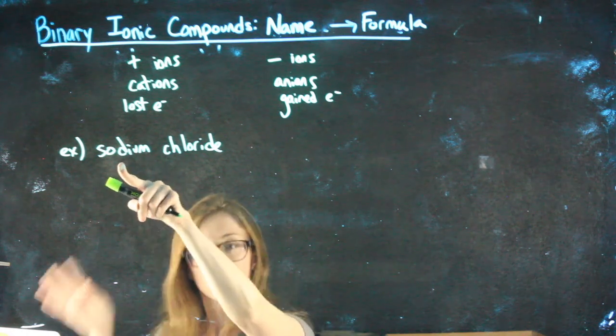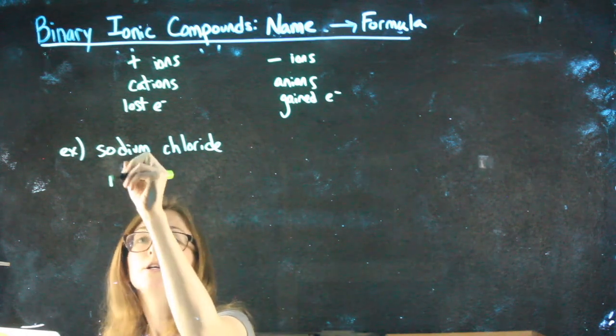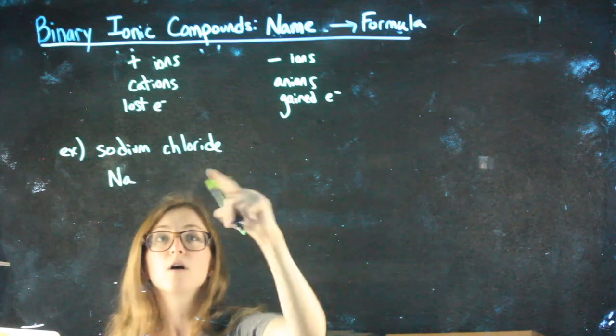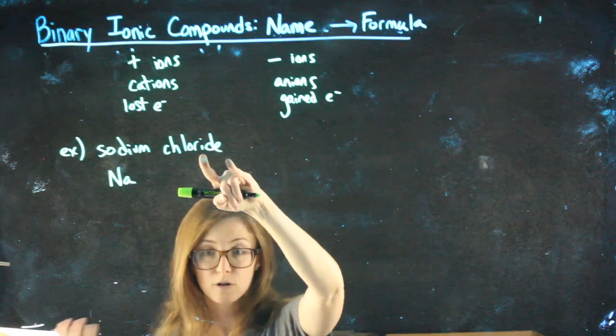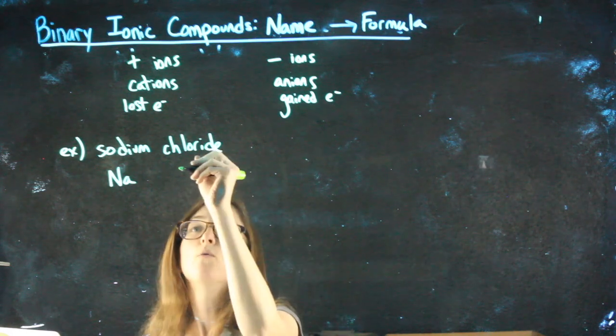Start by taking the name and coming up just with the symbols on the periodic table. So sodium is not S, right? You go to the periodic table, you find sodium, you'll see that it's Na. Chloride. Remember, the ide, we had changed the ending, so really we're looking for chlorine on the periodic table, which is Cl.